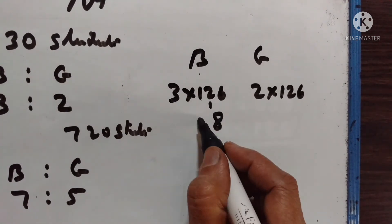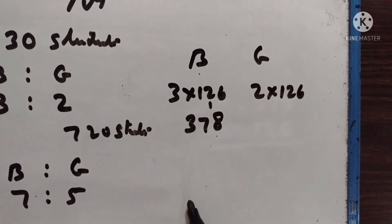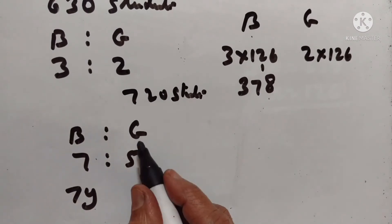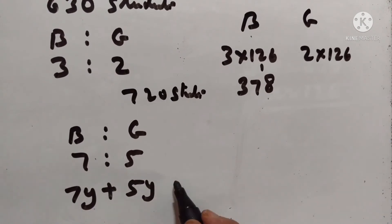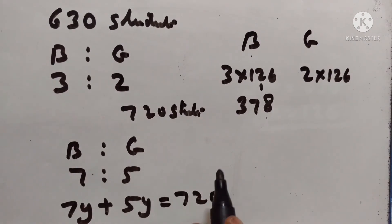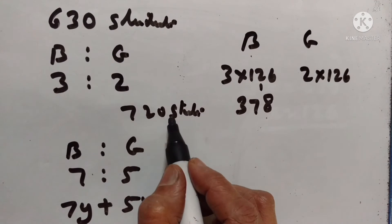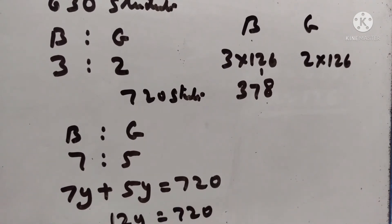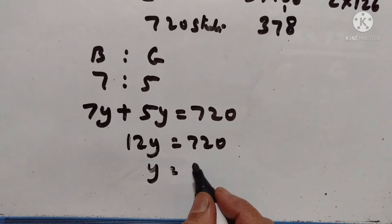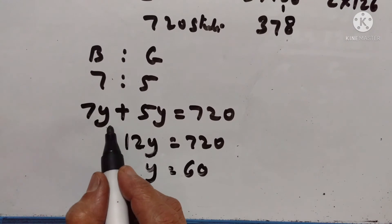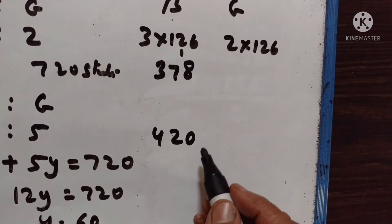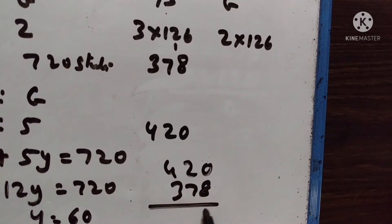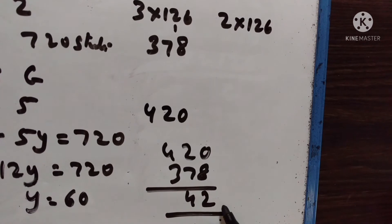Number of boys is equal to 3 into 126, which is 378. Now let the number of boys be 7y and let the number of girls be 5y. 7y plus 5y is equal to 720. Total number of students becomes 720 after 90 new students join. So 12y is equal to 720, y is equal to 60. Number of boys is equal to 7 into 60, that is 420. The increase in the number of boys is 420 minus 378 equals 42. Therefore the number of newly admitted boys is equal to 42.